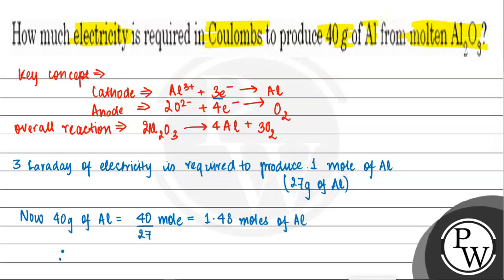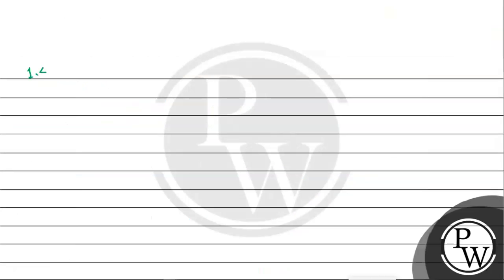Therefore, we can say that 1.48 moles of aluminum can be produced by 1.48 multiplied by 3, which is equal to 4.48 Faradays.